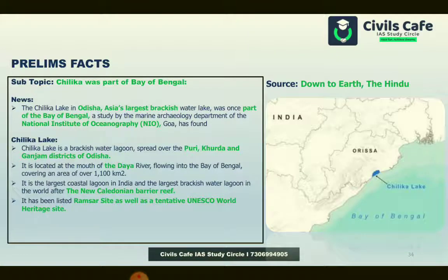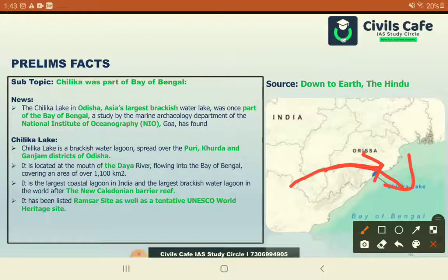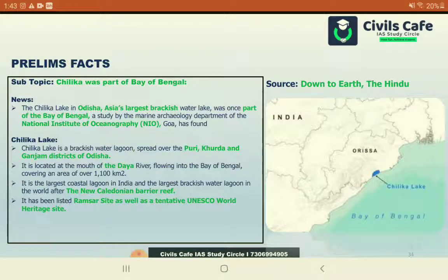New research states that Chilka Lake was once part of the Bay of Bengal. Chilka Lake is the largest brackish water lake in Asia, located at the mouth of the river Daya, and is the largest coastal lagoon. The Mahanadi river used to flow to the Bay of Bengal, depositing sediment and forming a delta. Sand bars arose, creating a differentiation between fresh water and brackish water backwaters, leading to the formation of Chilka Lake during the Pleistocene Epoch.